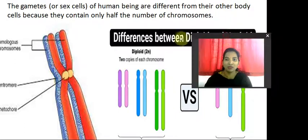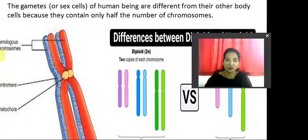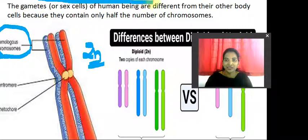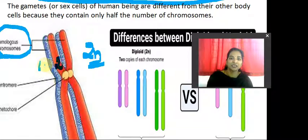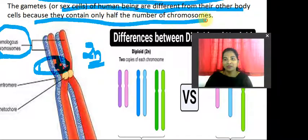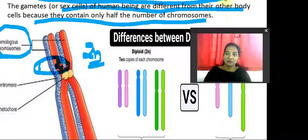A cell which has a full number of chromosomes with two of each kind is called a diploid cell. You can see homologous chromosomes present in the diploid — two copies, two sets. In other words, a diploid cell has two sets of each type of chromosome. Gametes — the sex cells — are different from other body cells because they contain only half the number of chromosomes. That is the difference between diploid and haploid.